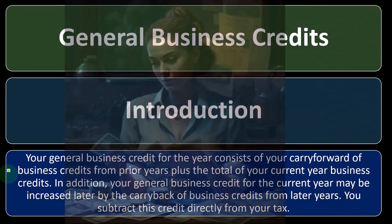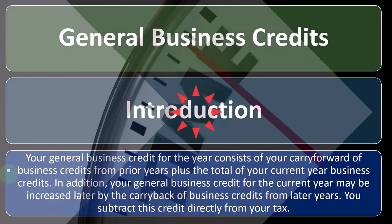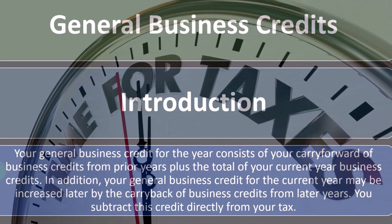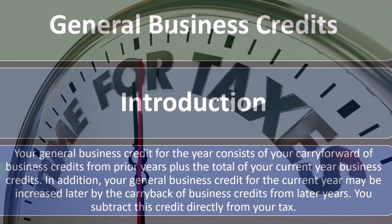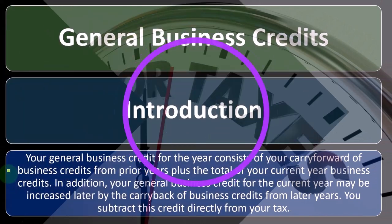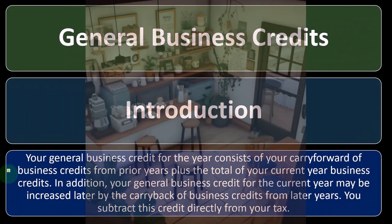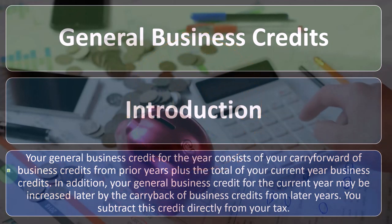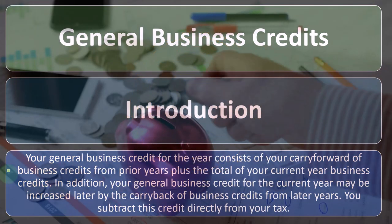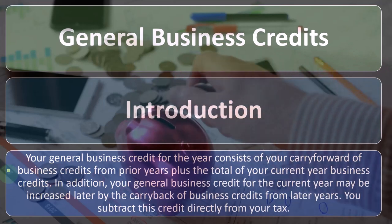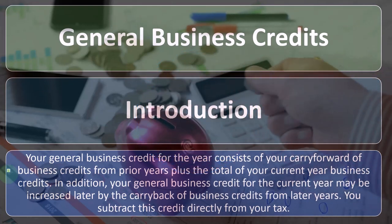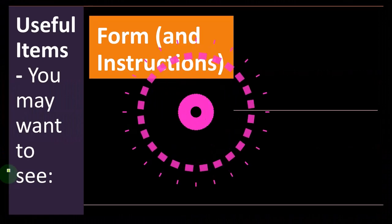That's particularly useful when we have carryovers, because the software can better guide us with those carryovers in that process. In addition, your general business credit for the current year may be increased later by the carryback of business credits from later years. So if we're not able to get a benefit in the current year, the question is: can I carry it back to a prior year, or can I carry it forward to a future year to get a benefit in a tax year other than the current year? You subtract this credit directly from your tax.